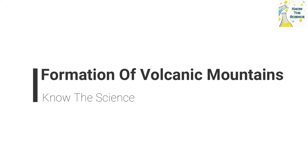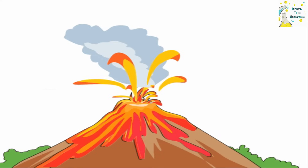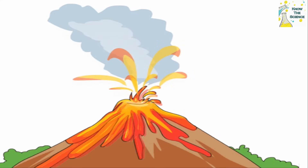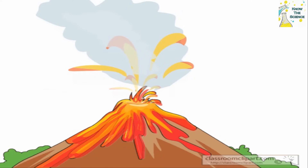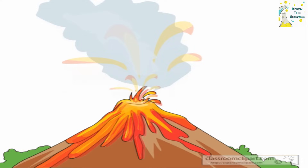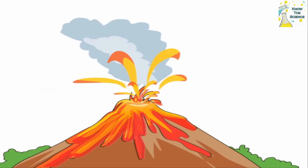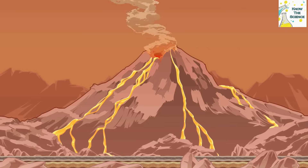Formation of volcanic mountains. Volcanic mountains are formed in areas where there is volcanic activity. This means that there is a place in the Earth's crust where there is a crack or volcanic vent. Magma, or molten rock, is lighter in weight than the solid rock around it. Because of this, it tends to rise to the surface.